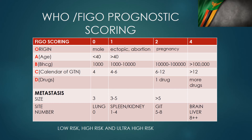Adding up all parameters: a total score below seven is low risk; seven and above is high risk; above 12 is ultra-high risk. Ultra-high risk includes patients with brain or liver metastasis, metabolic disturbances from metastasis, life-threatening severe hemorrhage, or a total score above 12. This classification exists because these patients have a significantly elevated risk of mortality.